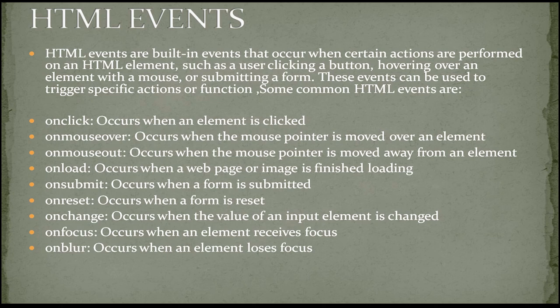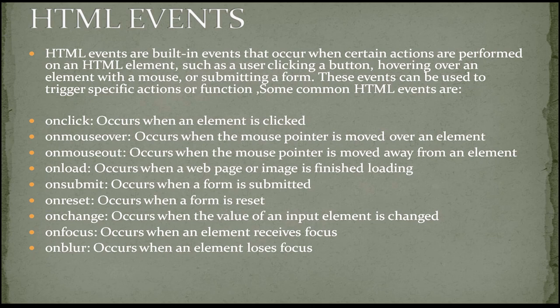Onreset occurs when a form is reset. For example, if you entered information and find something is wrong, you click reset and all the information returns to its default state. Onchange occurs when the value of an input element is changed — for example, if there is a text box on a web page and you enter something, the onchange event will be fired. Onfocus occurs when an element receives focus.